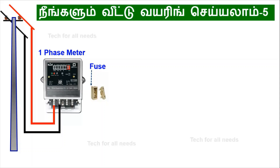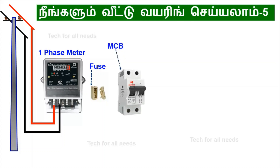First one is MCB. MCB has some protection functions. This is a backup protection. Main MCB is used here — this is the MCB or isolator. Total load current in amps gives the rating for the main MCB.